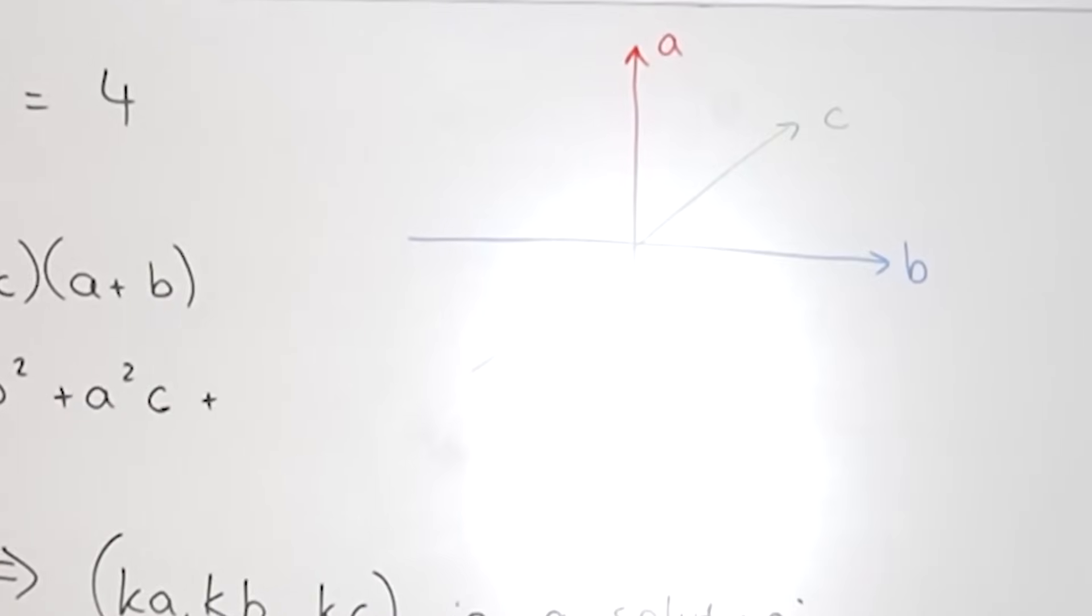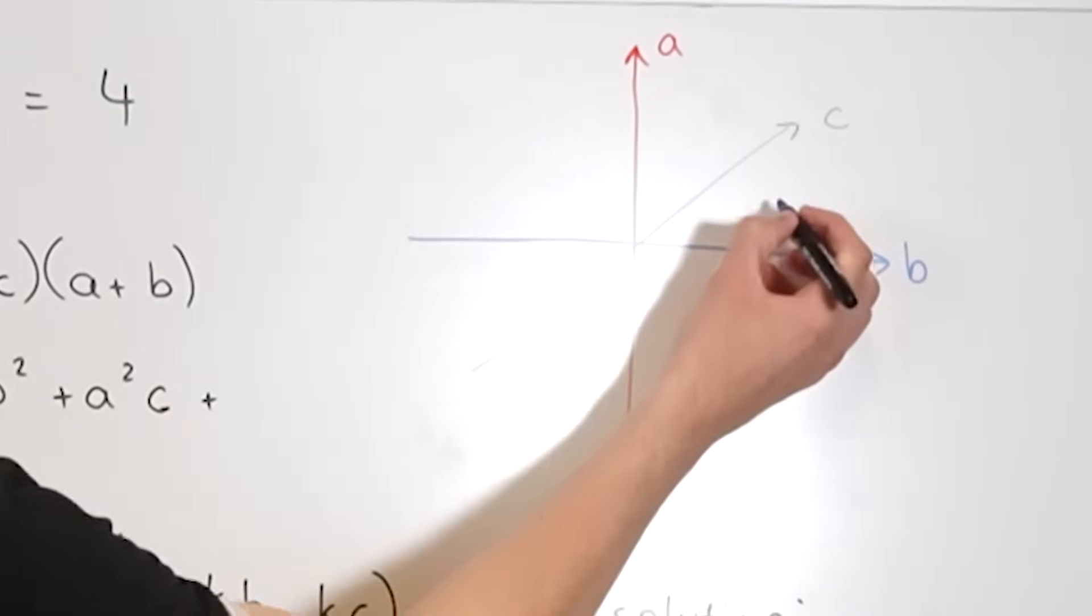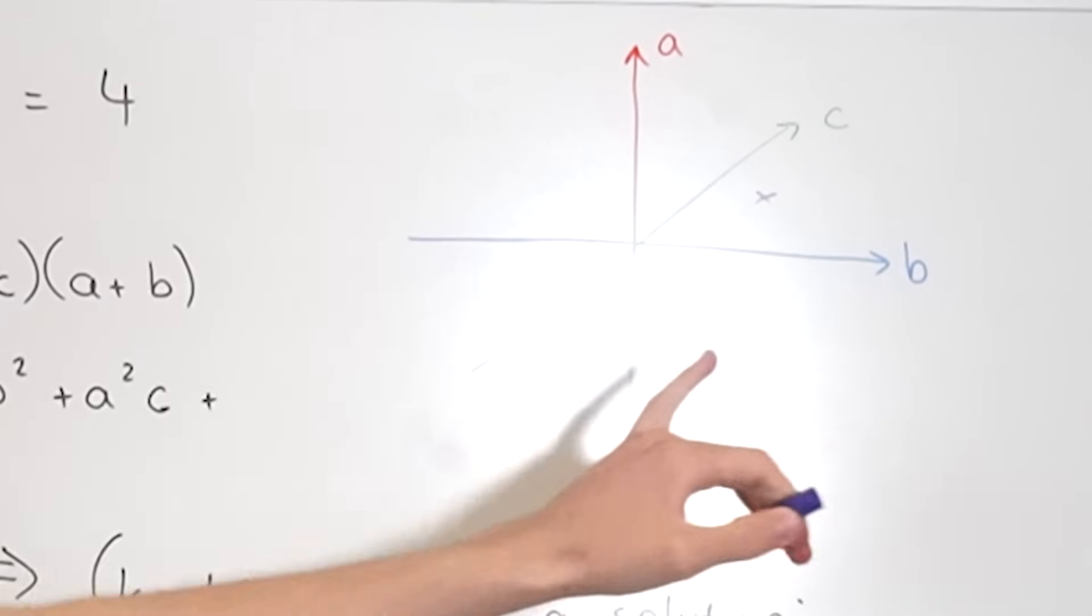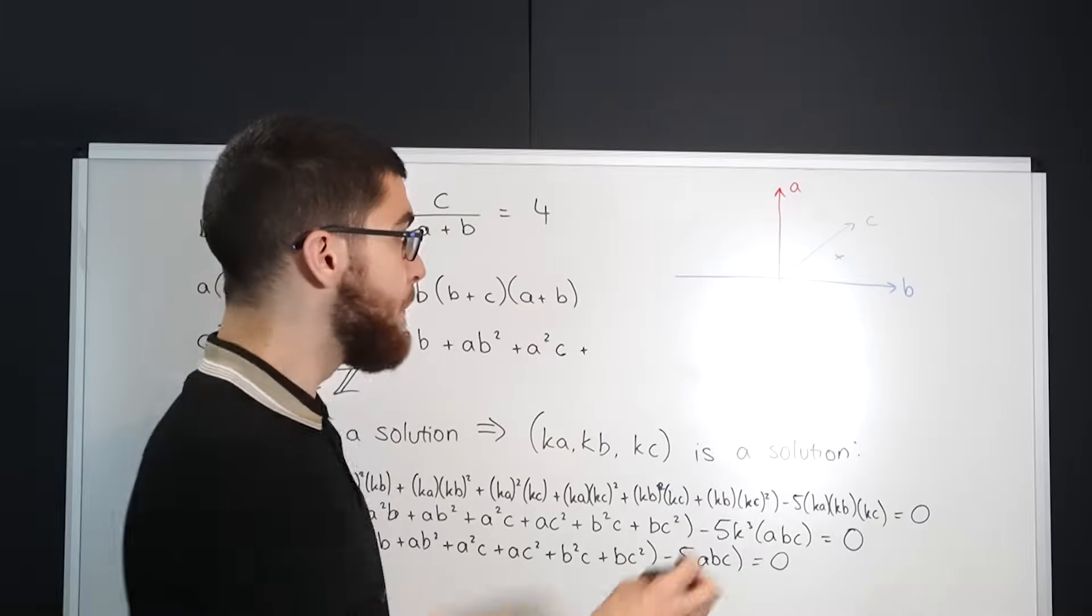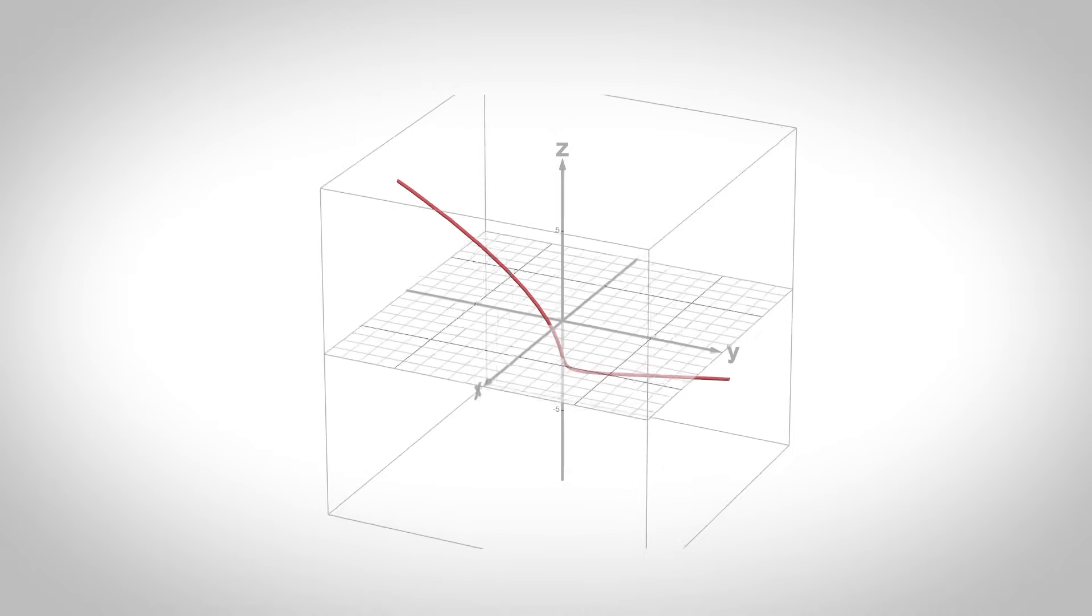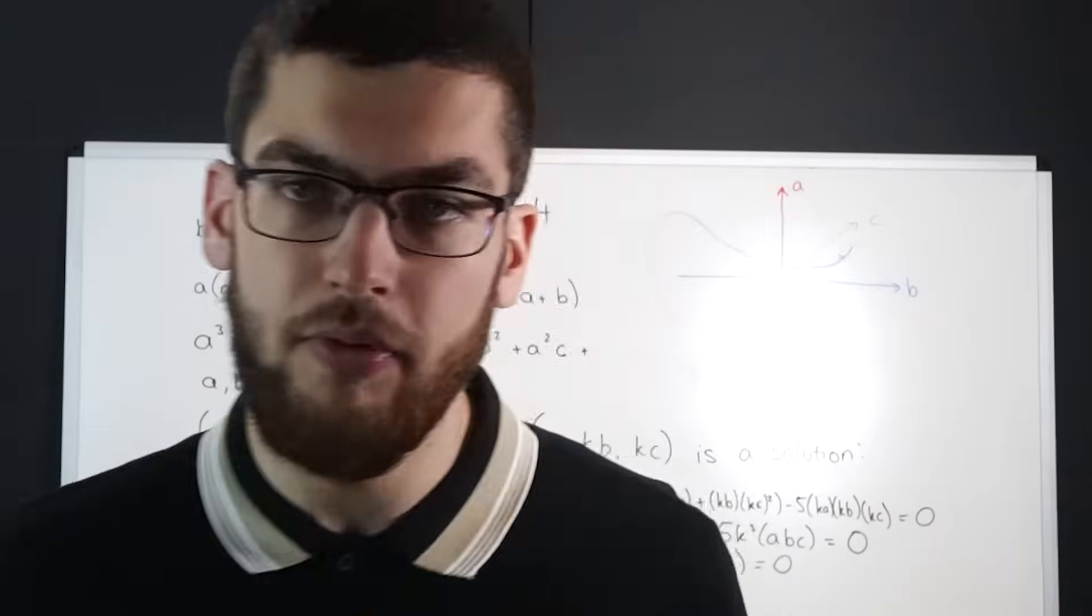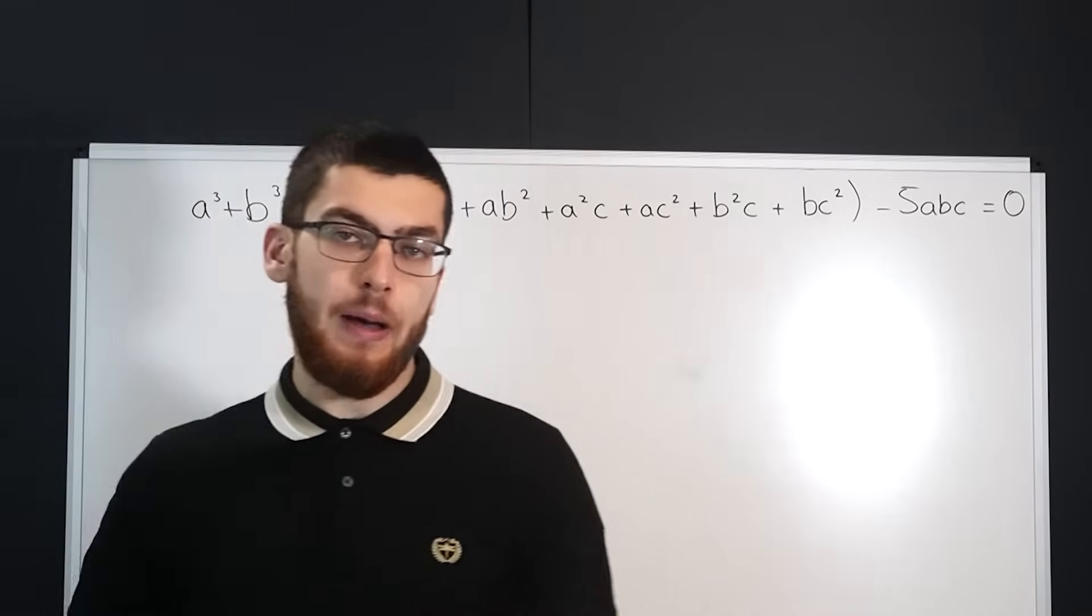That means that if we imagine our solutions as a 3D map in space, we don't just have one single point as a solution but we actually have a line of solutions. Can you see that on the board? Oh, the light is... Yeah, that's good enough. Okay, so what's the next step?